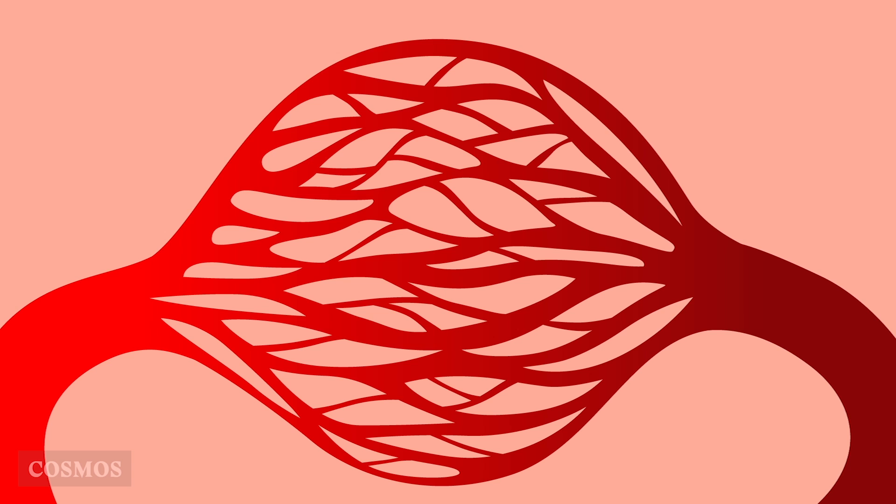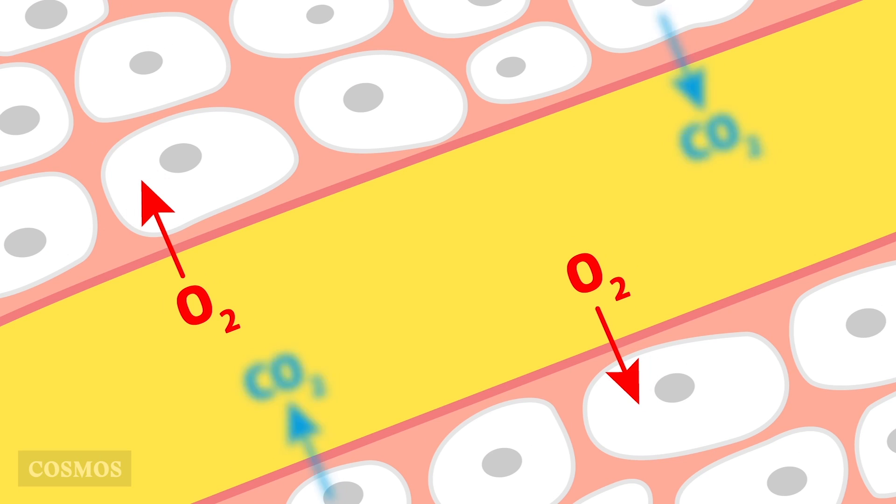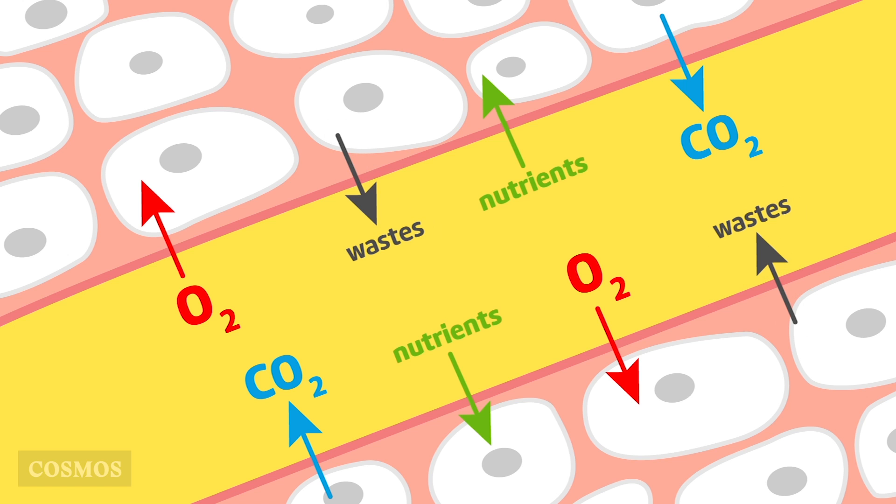In between are networks of tiny capillaries, which are spread out through the body so that every cell has a capillary close by. In the capillaries, materials transfer between the blood and surrounding cells by diffusing through the thin capillary walls.